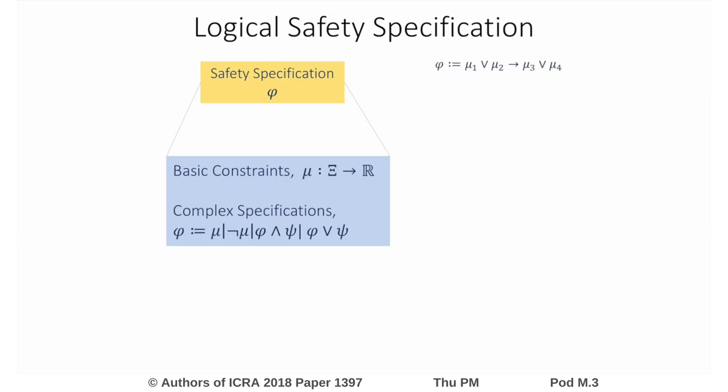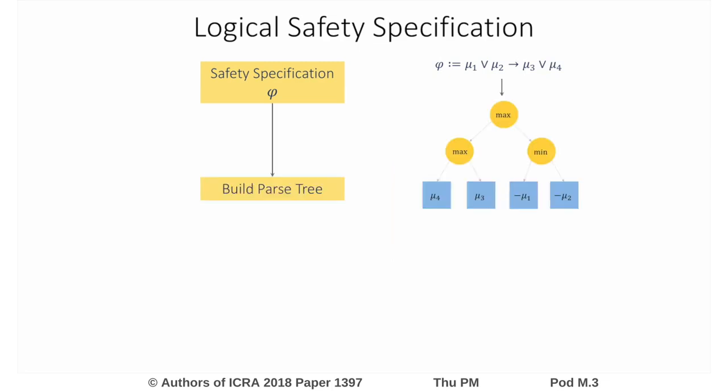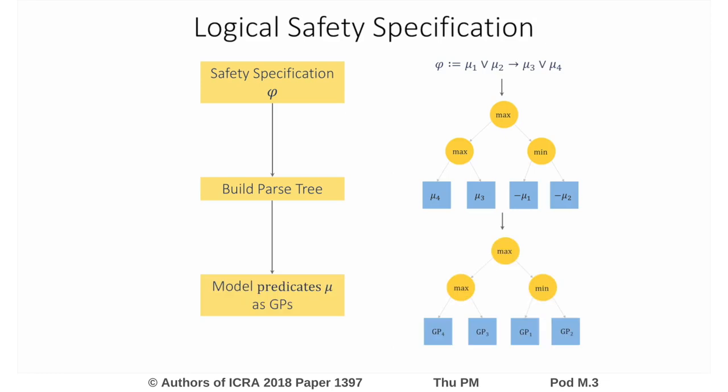For example, the specification on the right. We next build the corresponding pass tree where the leaf nodes are the predicates, and use this pass tree to model each predicate using a Gaussian process and combining them to get a coherent prediction about phi.